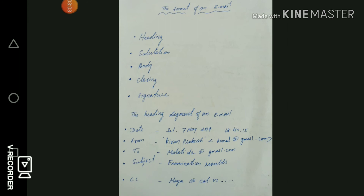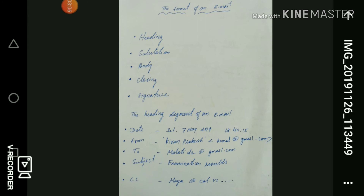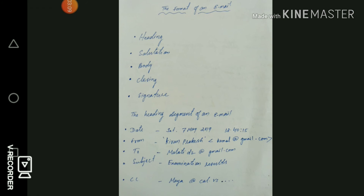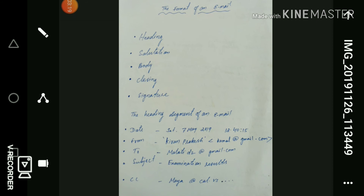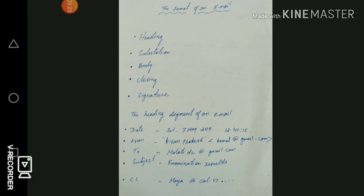Next we have the 'From' line. The 'From' line contains the sender's name and email address. The name does not include any personal title such as Miss, Mr., Dear, etc. While sending an email, the sender's address usually appears automatically.